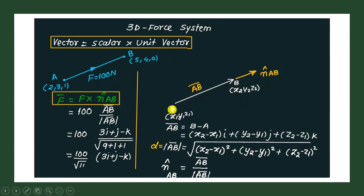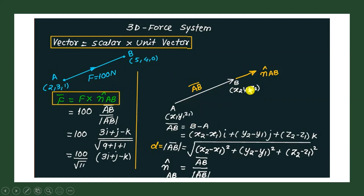The line is not parallel to the x-axis, not parallel to the y-axis, and not parallel to the z-axis. The coordinate of point A is (x1, y1, z1) and the coordinate of point B is (x2, y2, z2). The vector AB can be written as B minus A, that is: (x2 − x1)î + (y2 − y1)ĵ + (z2 − z1)k̂, where î, ĵ, k̂ are unit vectors along the x, y, and z axes respectively.